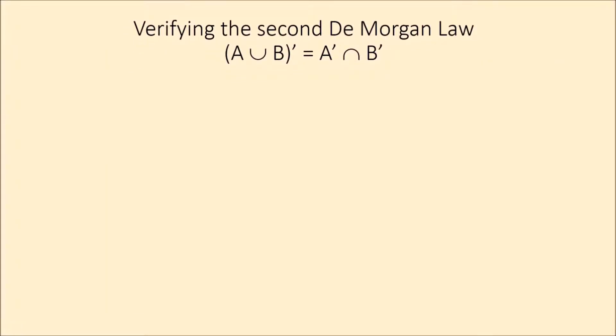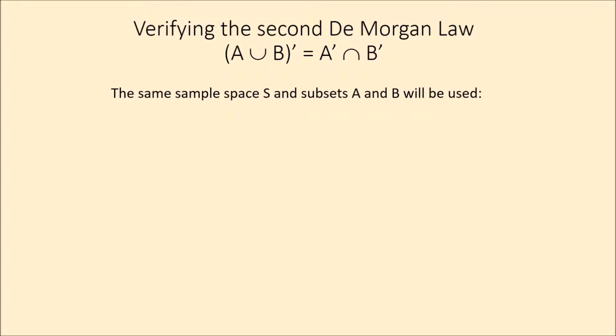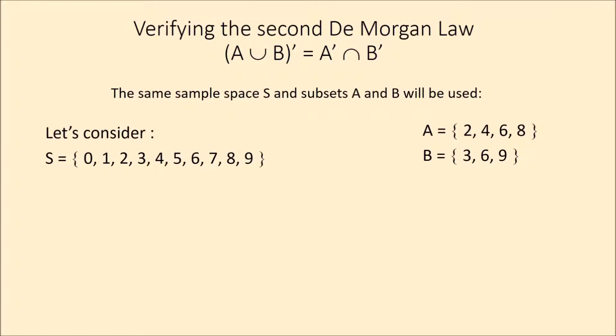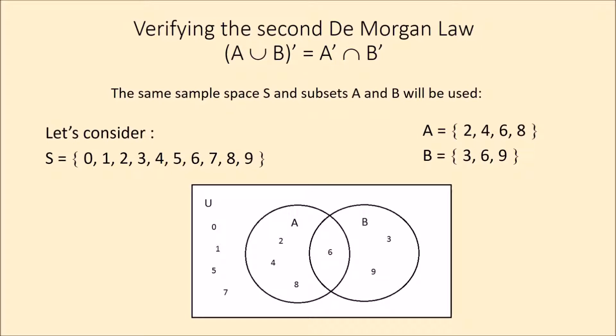Verifying the second De Morgan law: the complement of the union of subsets A and B is equal to the complement of subset A intersection the complement of subset B. The same sample space S and subsets A and B will be used: S = {0, 1, 2, 3, 4, 5, 6, 7, 8, 9}, subset A as numbers multiple of 2, and subset B as numbers multiple of 3. The sample space and subsets A and B can be shown using a Venn diagram.